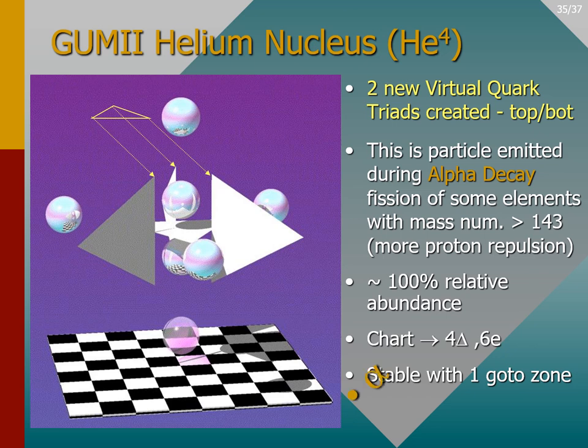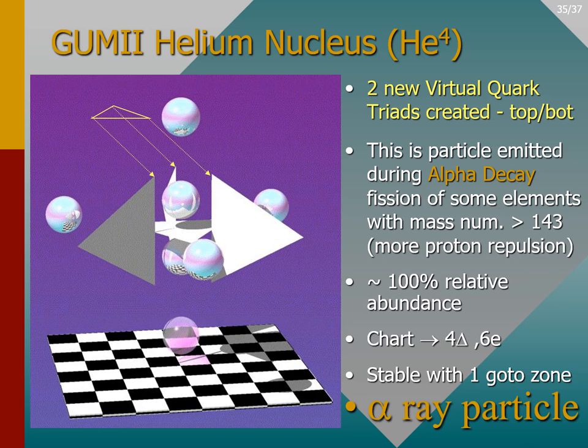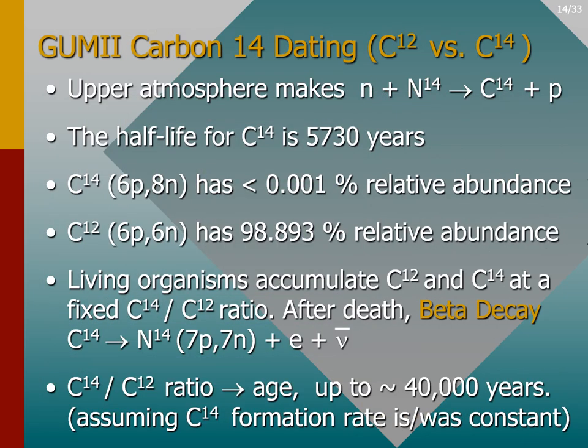This is the particle emitted from the nucleus that makes up alpha rays. Before we say goodbye to the GUMMI Baryon models, let's review a practical use of our beta decay knowledge — in particular, let's learn about carbon-14 dating.